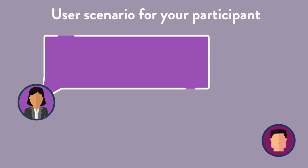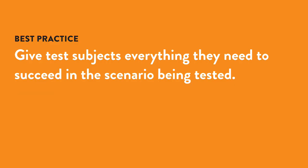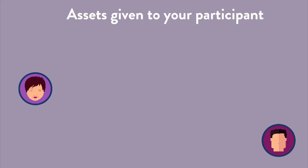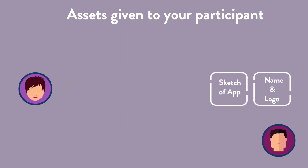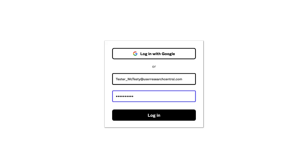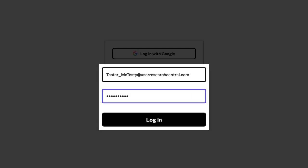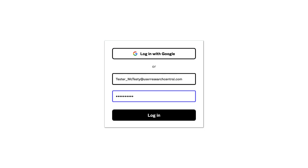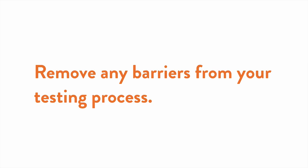It's not enough to just give them the scenario, so here's an important best practice: give your test subjects all the assets and information they need in order to succeed. In our example, this might include items such as the name and logo of the messaging app, a hand-drawn sketch they can use as a model, a text file with sample names they might need, and clear directions on the specific use case they are designing for. Even seemingly small details, such as providing login information to the software — in this case Figma — should be anticipated and provided to your participant.